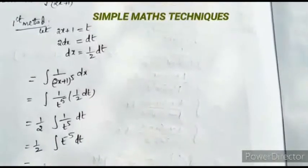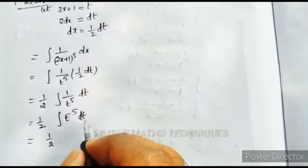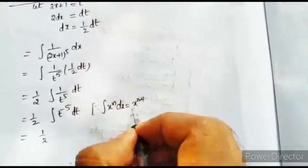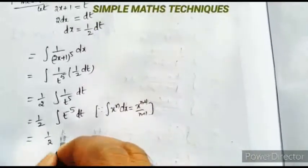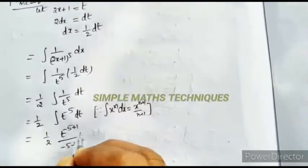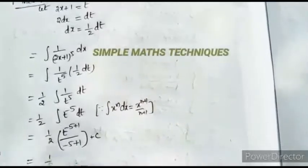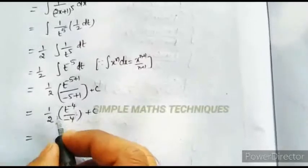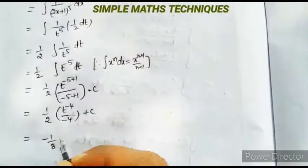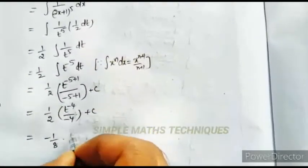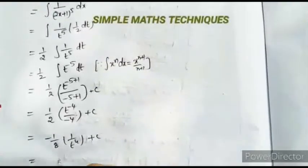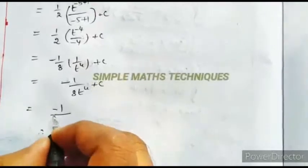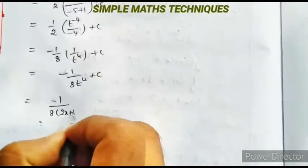This matches the formula: integration of xⁿ dx equals x^(n+1) by (n+1). So we write t^(-5+1) by (-5+1), that is t^(-4) by (-4). So 1/2 into t^(-4) by (-4) plus c, which equals -1/8 into 1/t⁴ plus c.